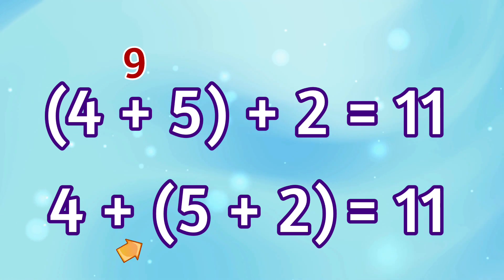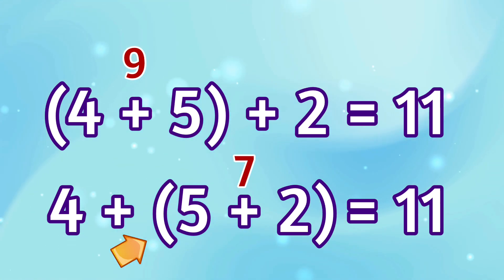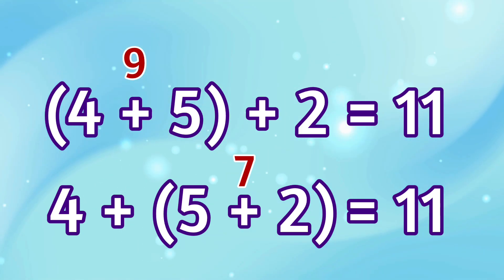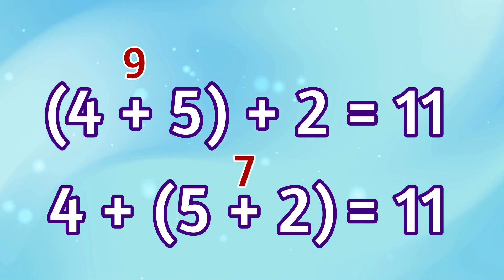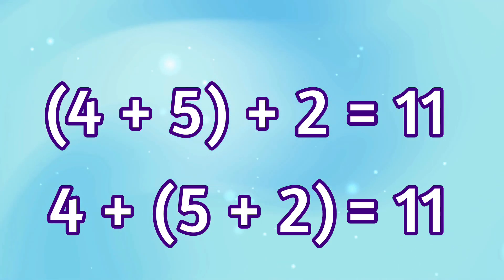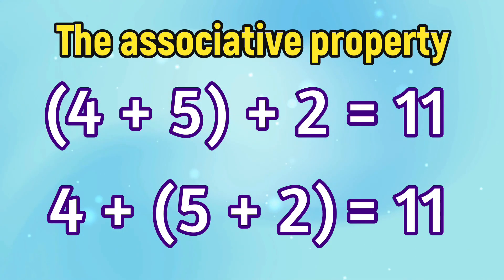Then 5 plus 2 equals 7, and 4 plus 7 equals 11. Isn't that cool? It doesn't matter how the numbers are grouped when you add — the answer stays the same. That's the associative property.